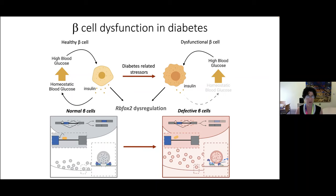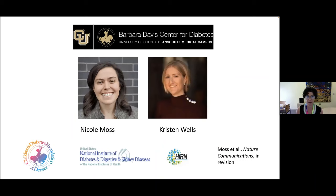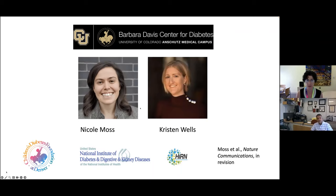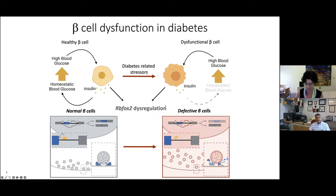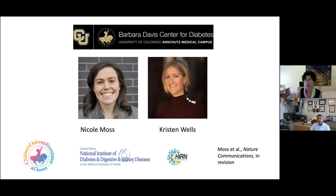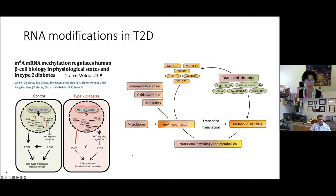In summary, beta cell stress results in alternative splicing, a large number of which are specifically regulated by RBFOX2, an RNA binding protein regulating secretion events. This represents a novel level of regulation in islet biology. Thanks to graduate student Nicole Moss and computational biologist Kristen Wells — the paper is currently under revision. This work was supported by HERN, NIDDK funding, and the Barbara Davis Center through the Children's Diabetes Foundation. Now passing to Rohit, who will discuss RNA modifications in type 2 diabetes and other metabolic tissues.